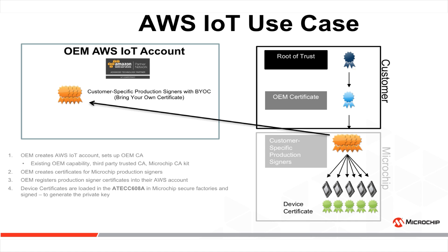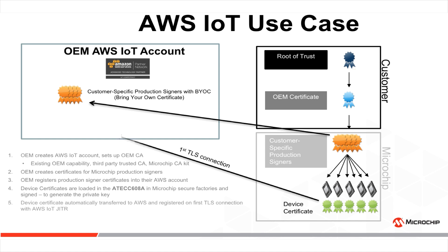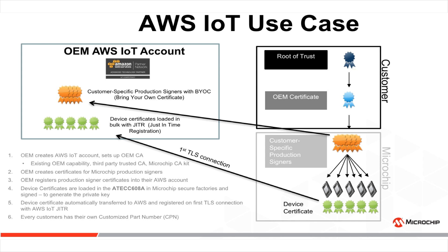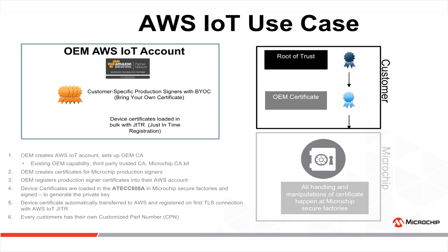Device certificates are loaded into the ATECC608A in Microchip secure factories and signed to generate a private key. The private key remains in the secure element for the whole life cycle of the product. Device certificates are automatically transferred in bulk to the AWS IoT accounts of the user and registered on the first TLS connection with AWS IoT using the just-in-time registration function. At the end of the process, every customer has their own customized part number, and all the handling and manipulation of certificates happen at Microchip secure factories.